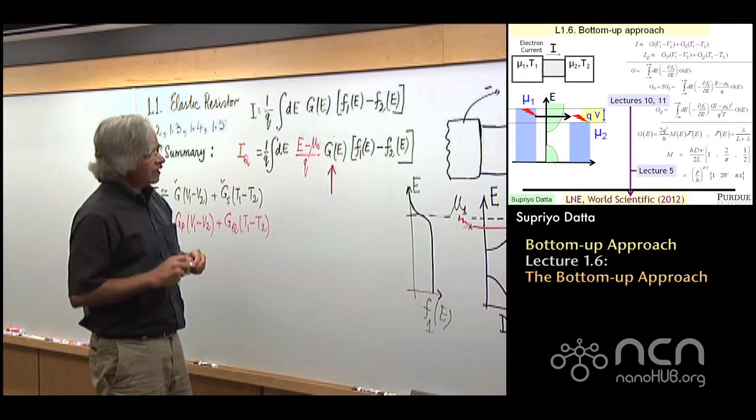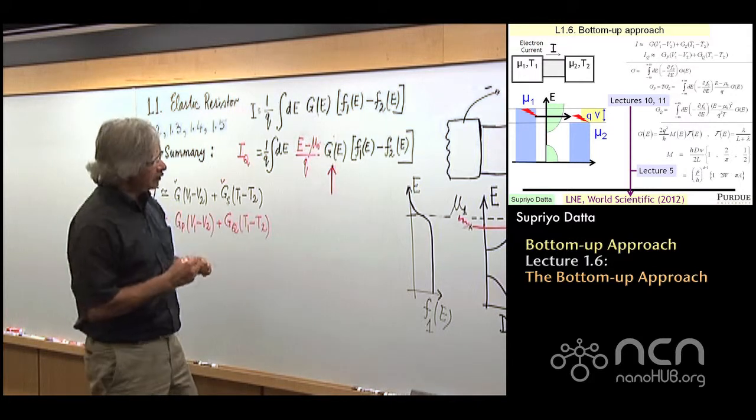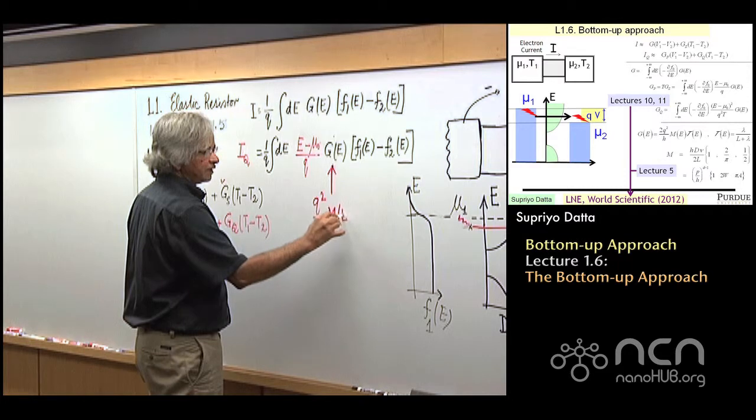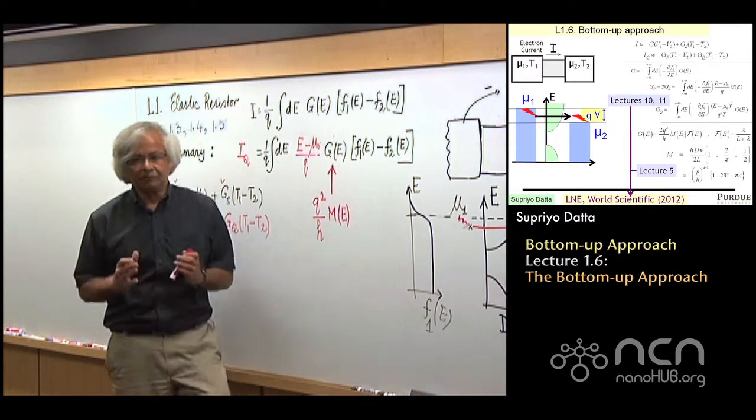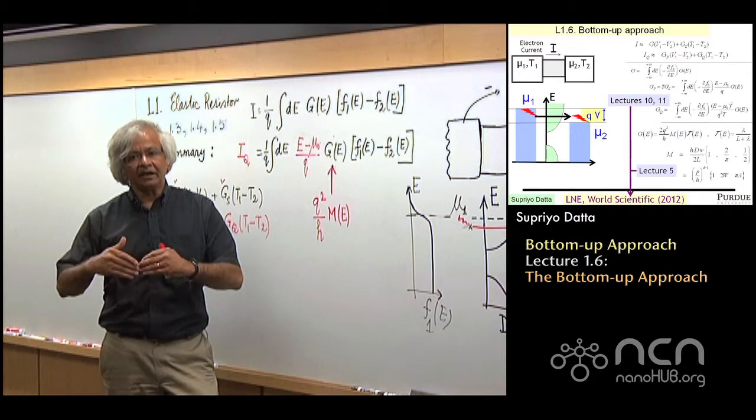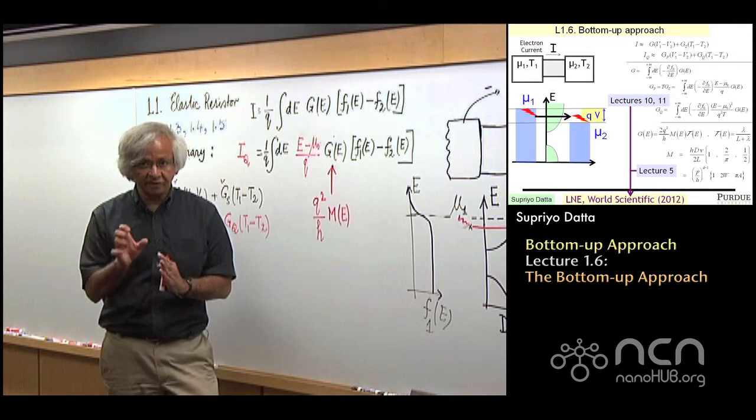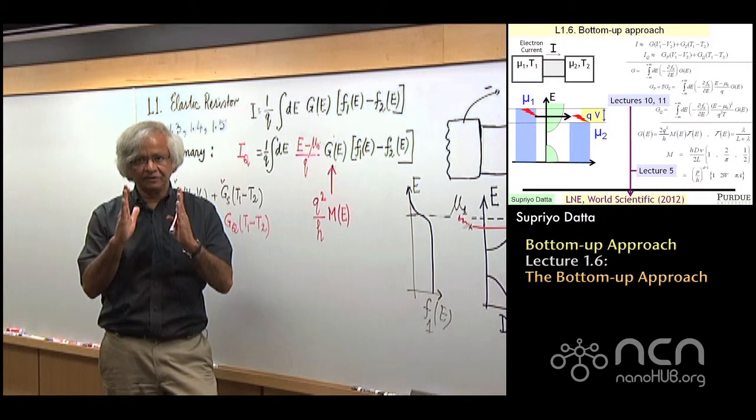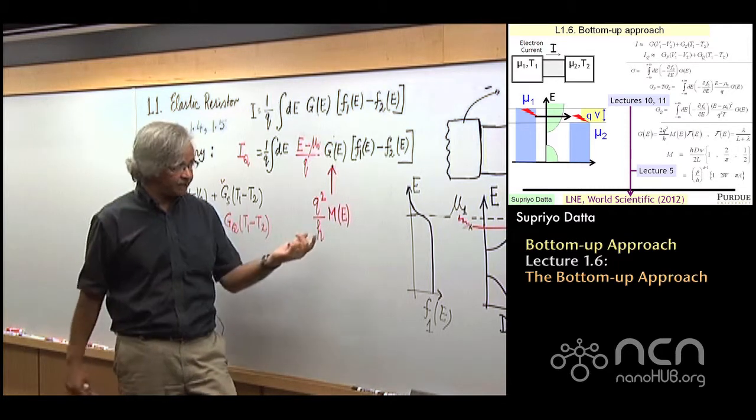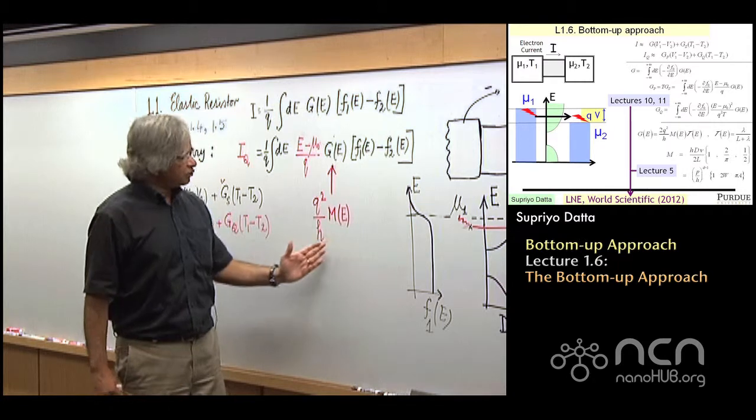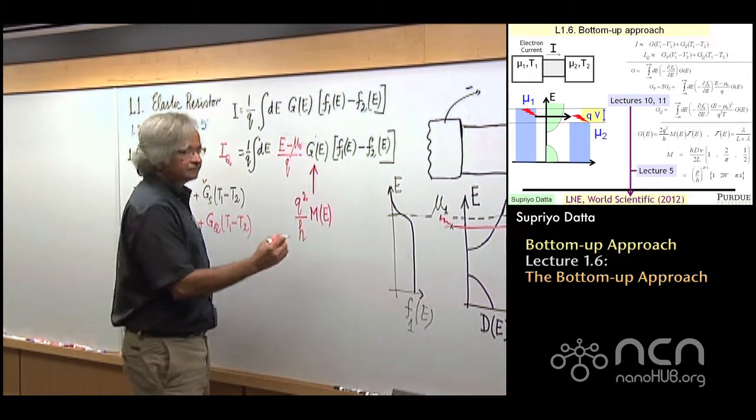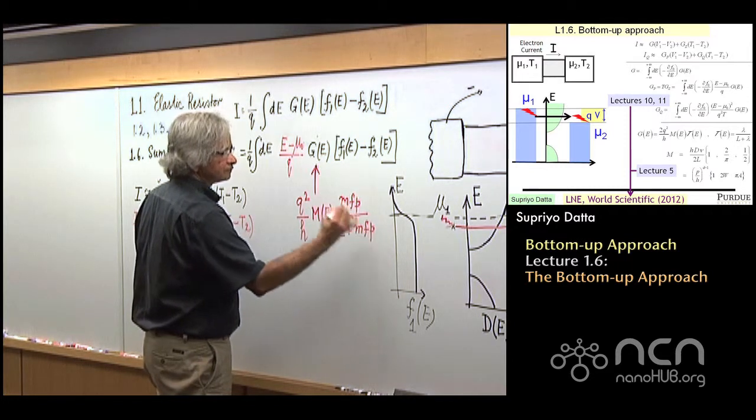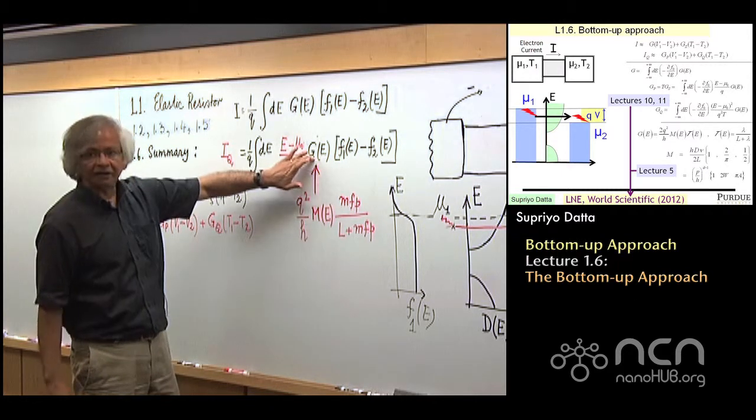Let me say a few more words about what this conductance function looks like, this g of E. If you had a ballistic conductor, it would be q square over h times the number of modes. This number of modes is proportional to density of states times velocity. An equivalent way of thinking about it: in 1D it's 1, in 2D it depends on the number of half wavelengths that fit in the width, and 3D it's the number of half wavelengths that fit in the cross section.